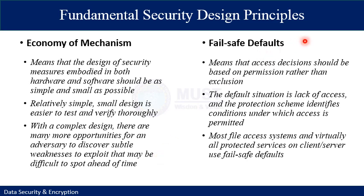The next principle is fail-safe defaults. It means that access decisions should be based on permissions rather than exclusions — you provide permissions based on user access. The default situation is the lack of access; you do not allow access to any user or process in any communication. The protection scheme identifies conditions under which access is permitted.